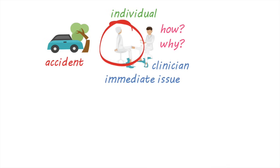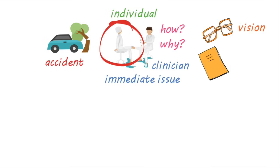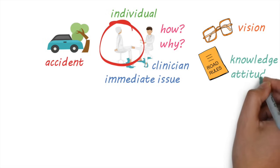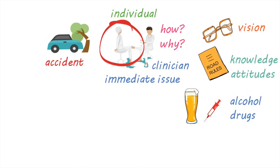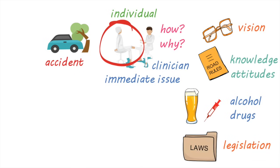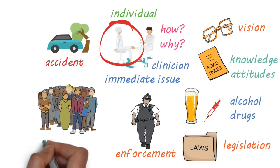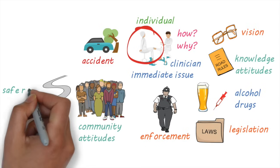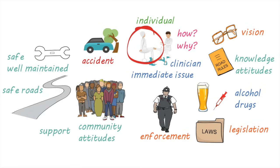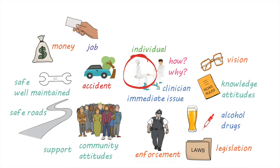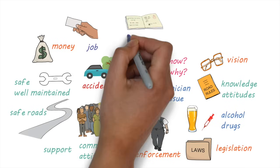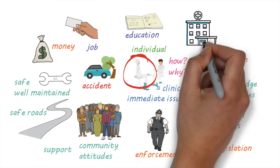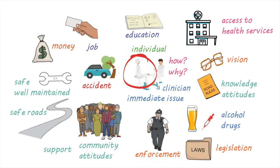For example, why did he have the accident? Was there a problem with his vision? Was it poor knowledge of driving skills or bad attitudes towards driving? Was he under the influence of alcohol or drugs when he was driving? Are there laws against this and resources to enforce it? What are the community expectations or attitudes towards driving? Does he have a good social support network that will help in his recovery or prevent this from happening again? Was the road he was driving on safe? Was he driving a safe car that was well maintained? If not, why not — could he not afford it? Does he have a job that doesn't pay well? Why is that? Is it because he did not have access to good education? Was there good access to health services which would determine his treatment and recovery?